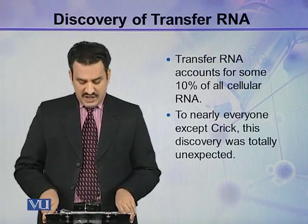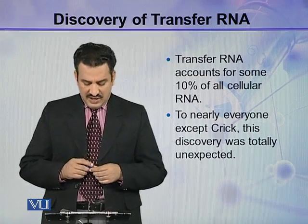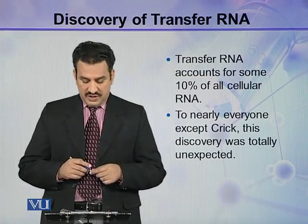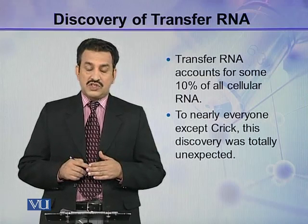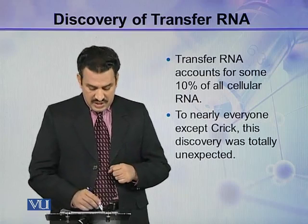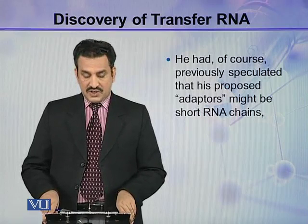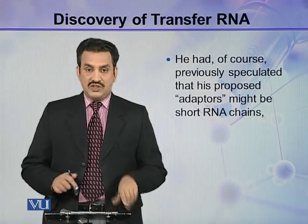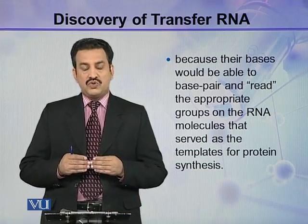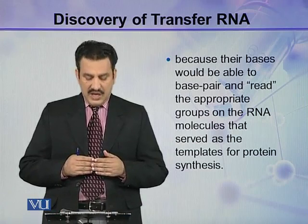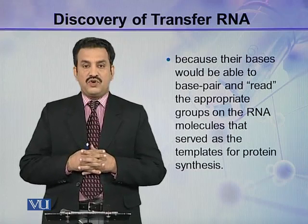Transfer RNA or tRNA accounts for some 10% of all the RNA present in a cell. This came as a surprise to nearly everyone except Crick, because he had previously speculated that his proposed adapters might be short RNA chains whose bases would be able to base pair and read the appropriate groups on the RNA molecule that served as a template for protein synthesis.